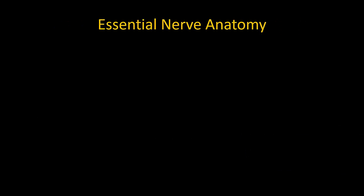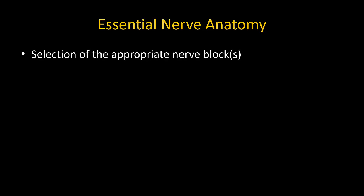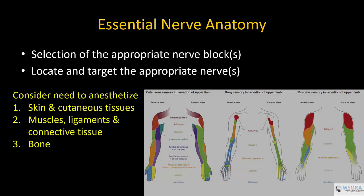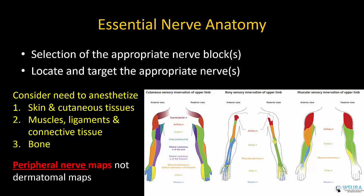A good understanding of the innervation of the upper limb is essential to select the appropriate block to be performed and to locate and target the nerve to be blocked. Remember that for surgical anesthesia, we must anesthetize not only skin, but also muscles, ligaments, and other connective tissues as well as bone. Maps of territories innervated by individual peripheral nerves are much more relevant than dermatomal maps.